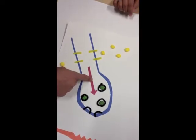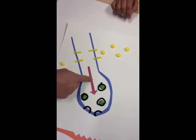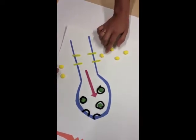Once the action potential arrives at the synaptic knob, calcium channels open, allowing calcium to flood into the axon.